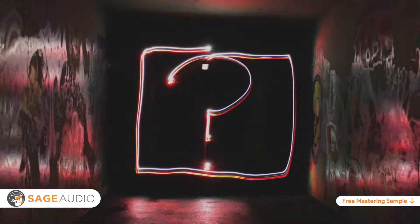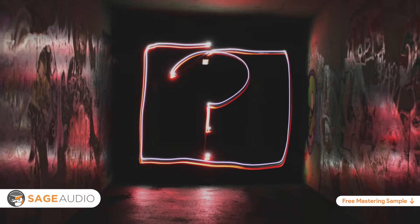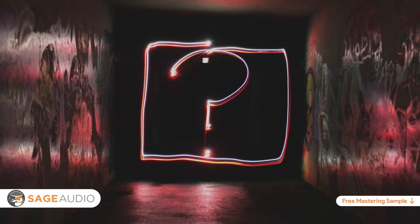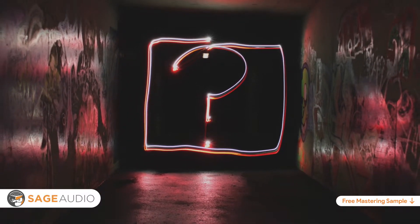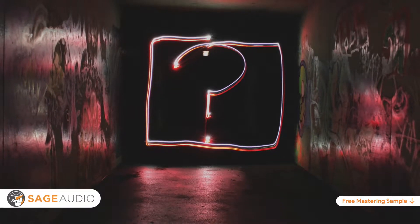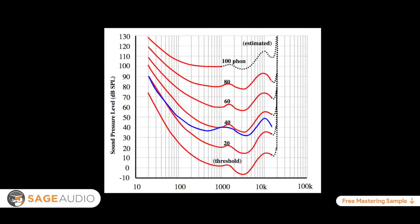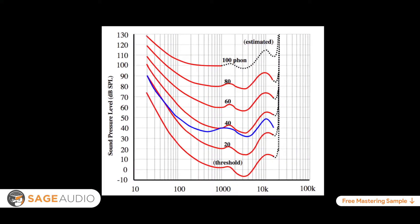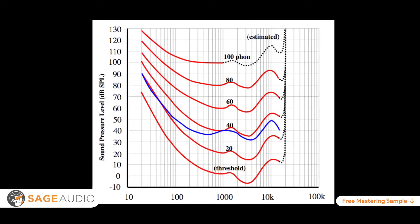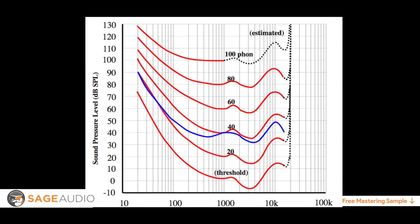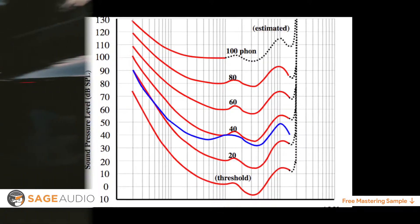But how does noise shaping do this? How can it reduce the perceived noise floor? Well, first let's look into how we perceive music. We can find our answer by looking into something called the Fletcher-Munson curve. The Fletcher-Munson curve, also known as the equal loudness contour, is the measurement of the sound pressure needed to create an equally perceived loudness across the full frequency spectrum.